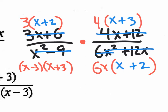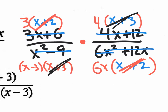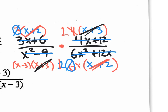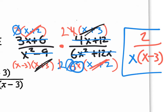We have an X + 2 up on top and an X + 2 down there — those cancel. We also have an X + 3 up on top and an X + 3 down there — those cancel too. What's left are coefficients: the 3 and the 6 cancel, leaving a 2. And the 2 with the 4 cancel, leaving a 2 up on top. The final answer is 2 over (X − 3)(X), which is option B.